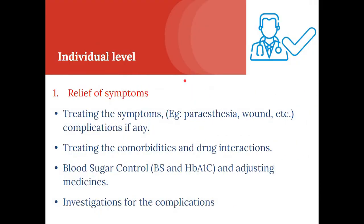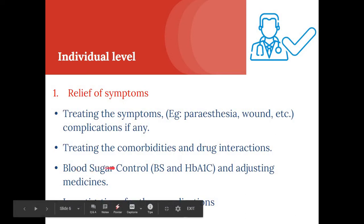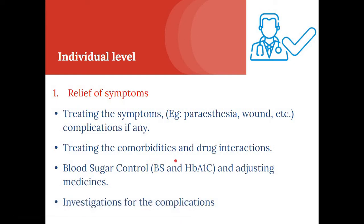At the individual level, first is relief of symptoms — if the patient was admitted with a complaint such as paresthesia, wound, fever, superadded infections, or signs of complications, we should treat those symptoms with appropriate medicines. Second is treating comorbidities and any drug interactions. Third is checking blood sugar control using blood sugar and HbA1c, which is also a separate heading addressed later.